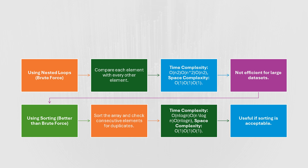Another approach is the sorting method. We sort the array and check consecutive elements for duplicates. This way we can identify all duplicate elements. It is useful only if sorting is acceptable. So these are the approaches we can follow to find duplicate elements.